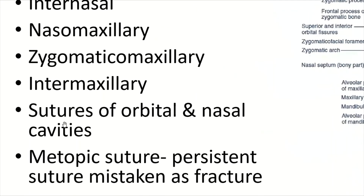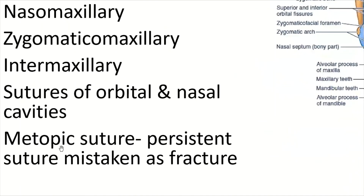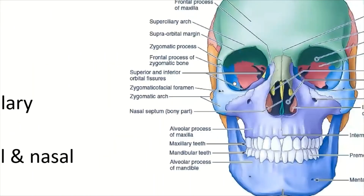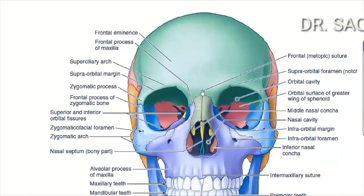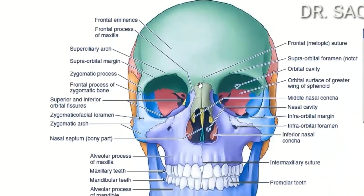Then are the sutures of the orbital and nasal cavities. And lastly is the metopic suture — also called the frontal suture — which is a persistent remnant suture that is sometimes mistaken for a fracture.